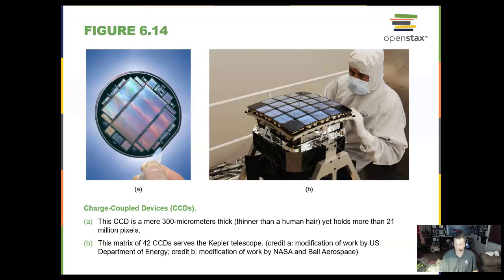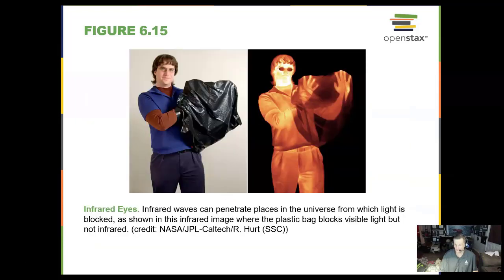The backbone of these cameras are the CCDs, called charge-coupled devices. It's basically a silicon wafer that is sensitive to light. In the infrared, we can see hands in a bag very clearly — that infrared gives off heat radiation.